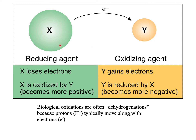Anything that reduces sends or gives electrons to the one that gets oxidized. X loses electrons and X gets oxidized by Y, becoming more positive. The oxidizing agent, which gets reduced, gains electrons. It is reduced by X and becomes more negative, because it is gaining electrons.